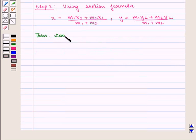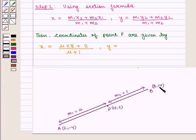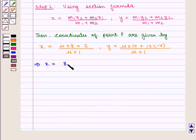Then the coordinates of point P are given by: x = (m1·x2 + m2·x1) / (m1 + m2) = (mu·8 + 1·2) / (mu + 1), and y = (m1·y2 + m2·y1) / (m1 + m2) = (mu·14 + 1·(−4)) / (mu + 1). This gives x = (8mu + 2) / (mu + 1) and y = (14mu − 4) / (mu + 1).